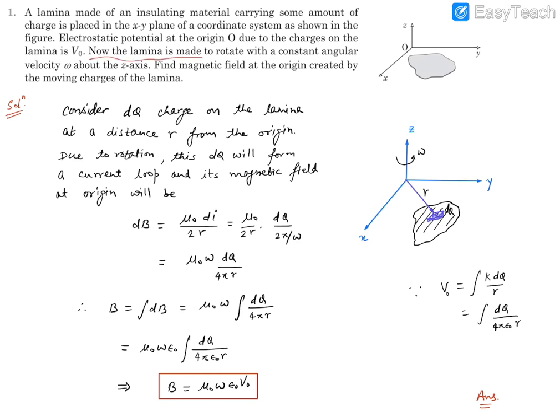Furthermore, now the lamina is made to rotate with a constant angular velocity ω about the z-axis. So you rotate everything, maybe like this. So this lamina rotates about the z-axis. We need to find the magnetic field at the origin created by moving charges of the lamina.